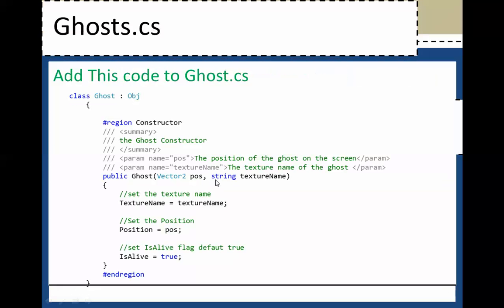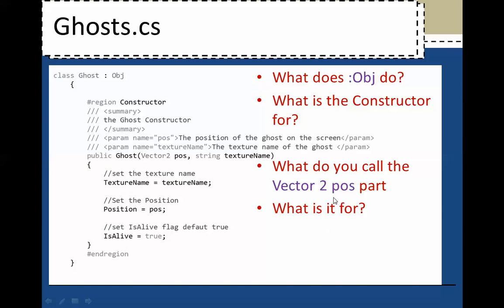Add this code to the ghost. Here's our constructor and we're going to ask you some stuff about that later. What does obj do? When you say class ghost semicolon obj, what does that do? What is this constructor for? What do you call the vector two pos part and what is it for? What does it do?